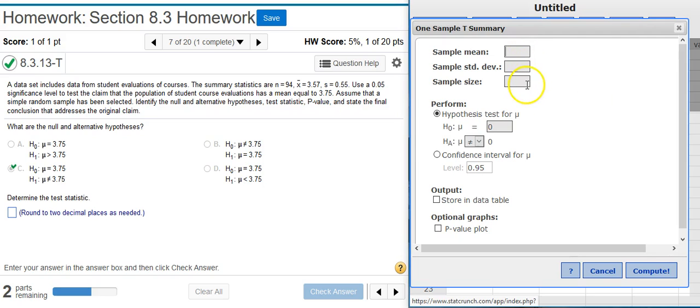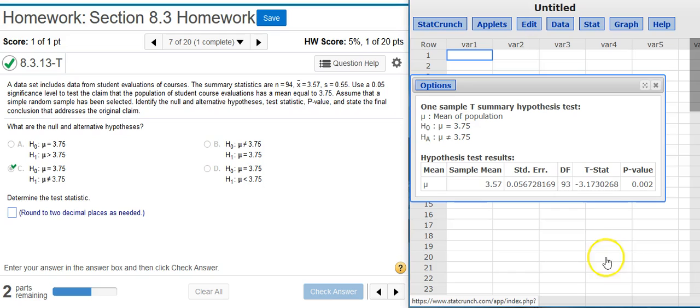In the options window, I'm going to put the summary statistics that were given to me in the problem statement. Then in the field for hypothesis testing, I'm going to make sure that this matches the null and alternative hypothesis that I previously selected.